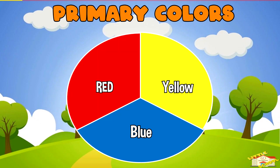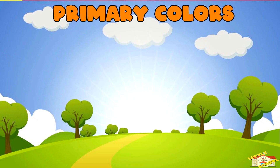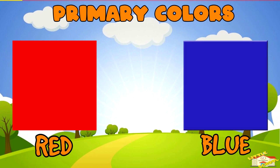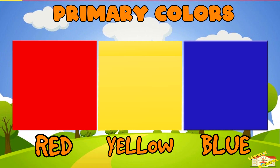Primary colors. Primary colors cannot be made by mixing other colors. Examples of these primary colors are red, blue, and yellow.